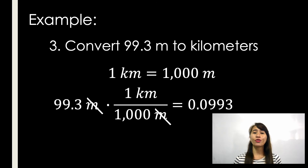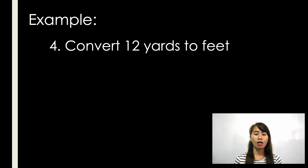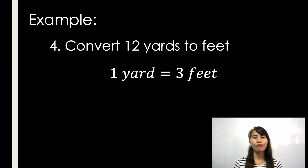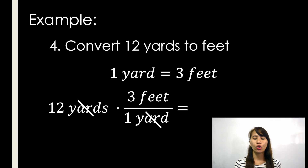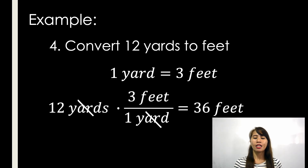Next example, number 4: convert 12 yards to feet. Feet is smaller than yards, so it is bigger to smaller — we multiply. How many feet are in 1 yard? 1 yard equals 3 feet. Copy the given: 12 yards multiplied by 3 feet over 1 yard — cancel yards. So 12 times 3 divided by 1 is equal to 36 feet.